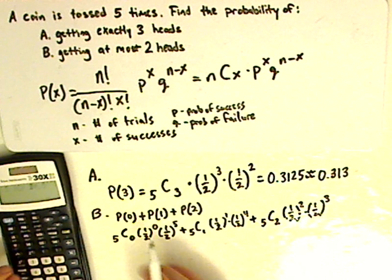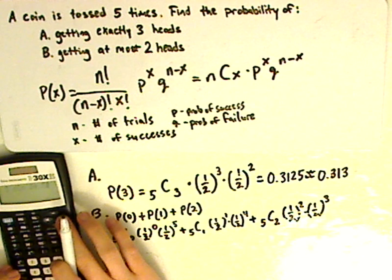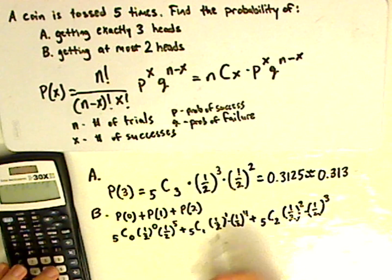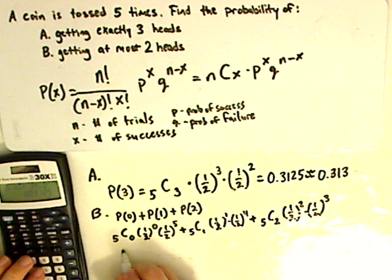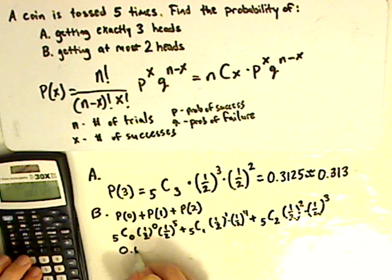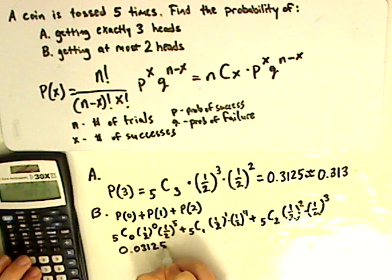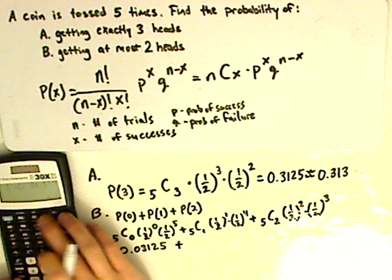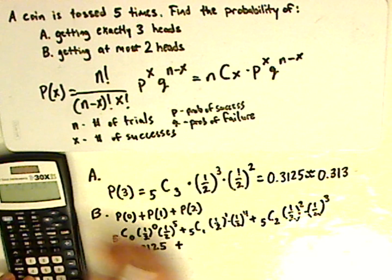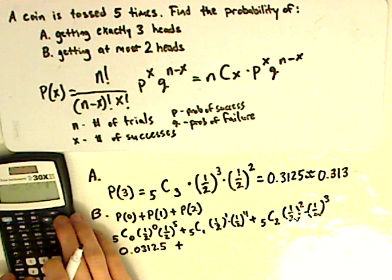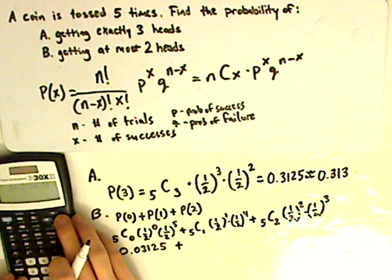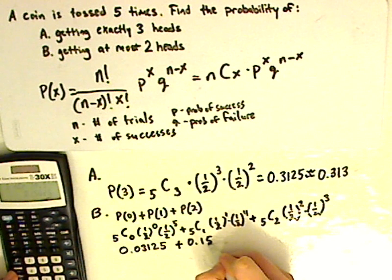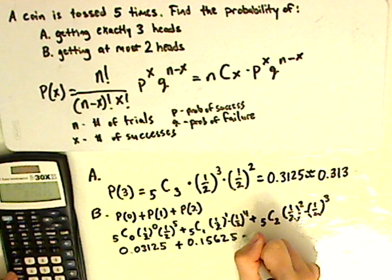So I'm just going to write it as it is on the calculator. 0.03125. Alright, so 5 C 1 times 1 half or 0.5 raised to the 1 times 0.5 raised to the 4th, that gives me 0.15625.